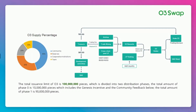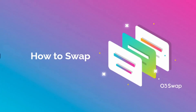The O3 token is an application token issued by O3 Swap and an important mediator for promoting the development of the O3 Swap network. Based on its economic model, all participants and developers are encouraged to invest in maintaining the overall ecosystem through community governance. There are three ways to earn O3: first, through airdrops via early participation in product testing and community contributions; second, through trade mining rewards by using O3 Swap; third, by providing liquidity to cross-chain pools. The total issuance limit of O3 is 100 million tokens.